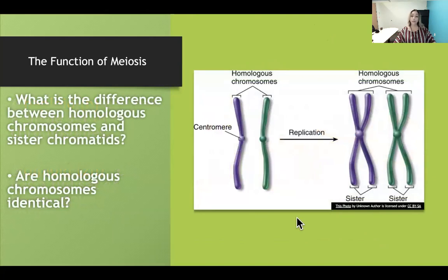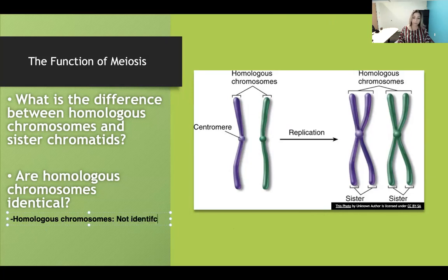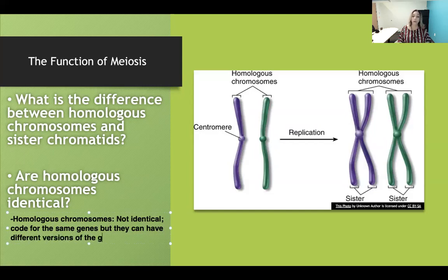Let's revisit homologous versus sister chromatids. Homologous chromosomes are not identical — they code for the same genes, but they can have different versions of the gene. We call these different versions alleles. One homologous chromosome comes from mom, one from dad. For example, they both code for eye color, but maybe mom has the version for brown eyes and dad has the version for blue eyes.